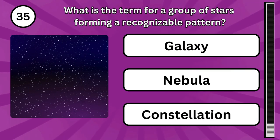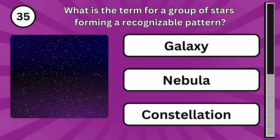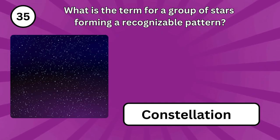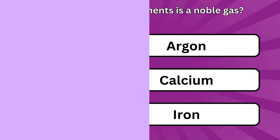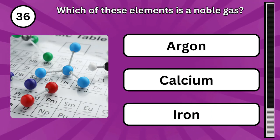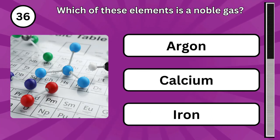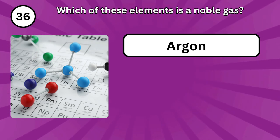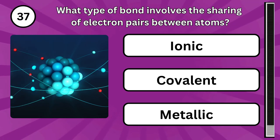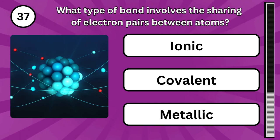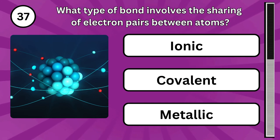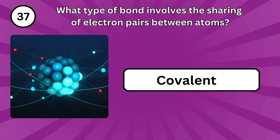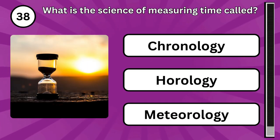What is the term for a group of stars forming a recognizable pattern? Which of these elements is a noble gas? What type of bond involves the sharing of electron pairs between atoms? What is the science of measuring time called?